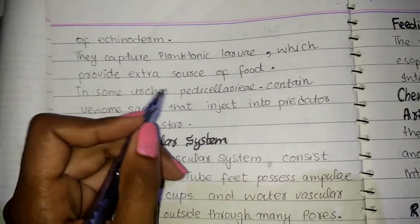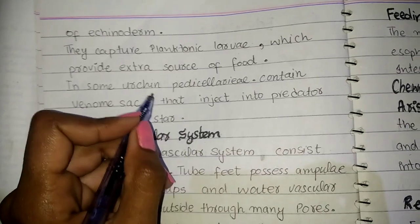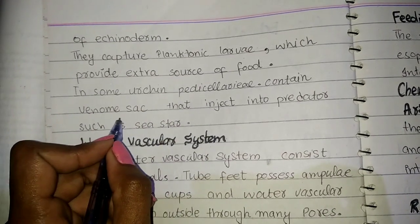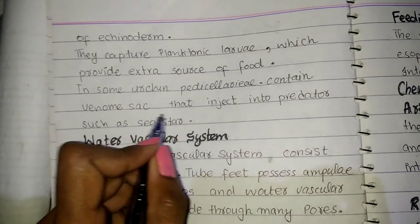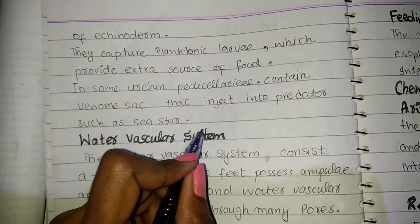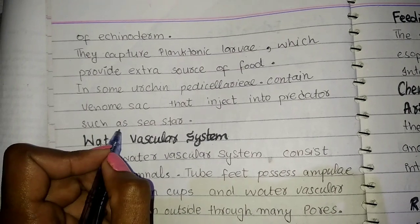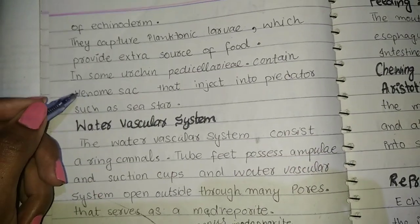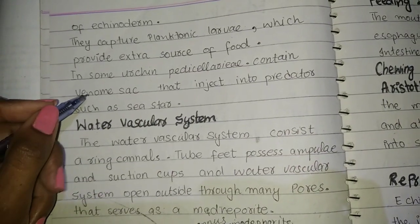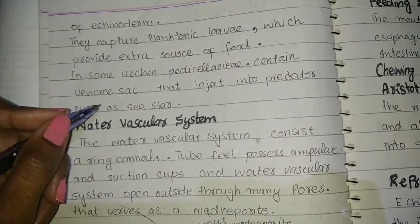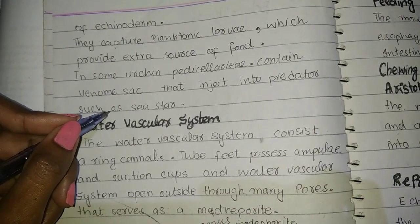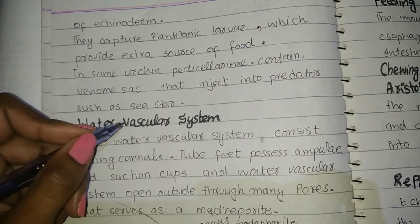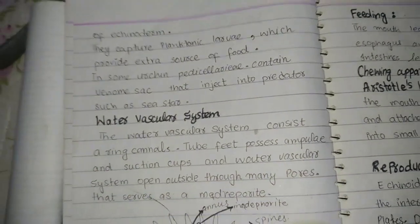In some urchins, the pedicellariae contain a venom sac that injects venom into predators such as sea stars.